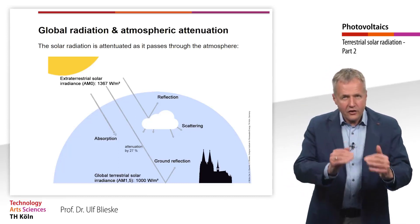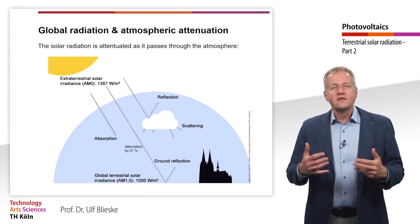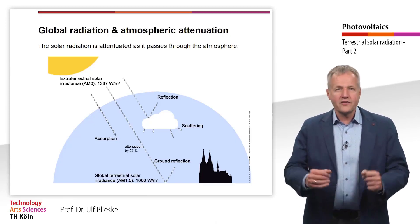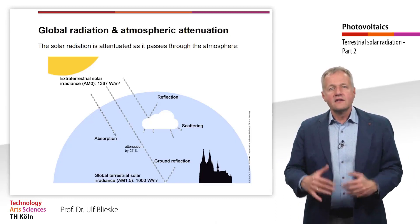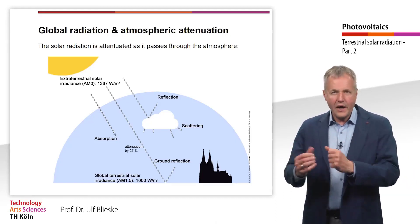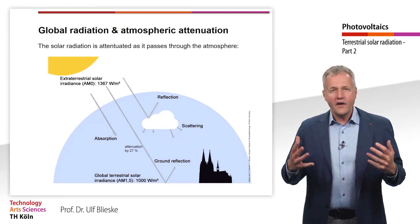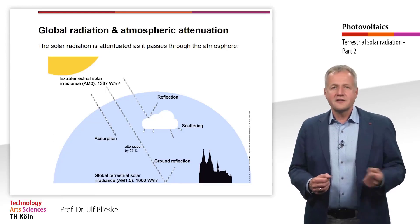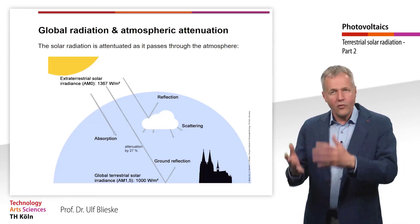After crossing the atmosphere 1.5 times, the solar irradiance is reduced to a value of 1000 Watt per square meter when reaching the ground. This value — 1000 Watt per square meter, or 100 mW per square centimeter — represents air mass 1.5 conditions, and is also used for standard testing conditions, STC, for solar cells and modules.